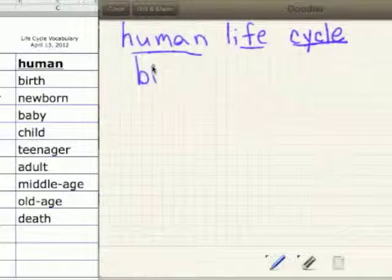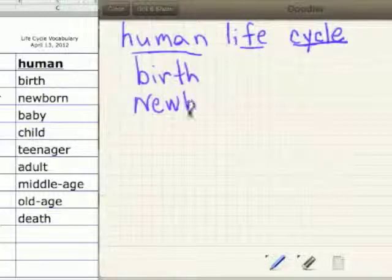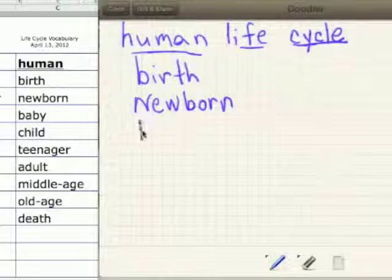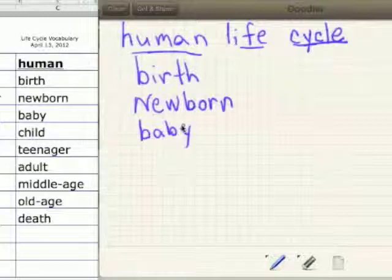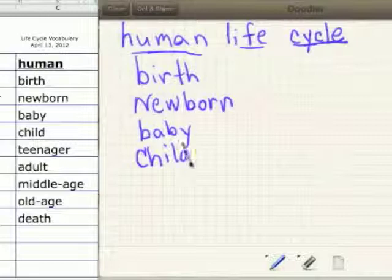You have birth. B-I-R-T-H. Newborn. N-E-W-B-O-R-N. Then you have a baby. B-A-B-Y. And as Poe said, babies smell very, very nice. The baby becomes a child, just like you. C-H-I-L-D.